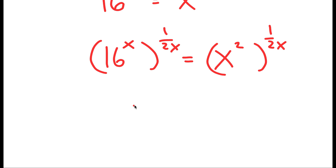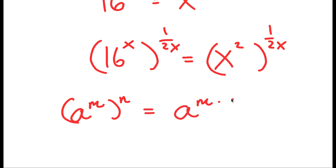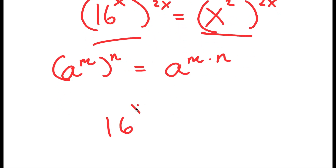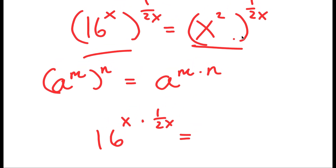Now, if I have something in the form a to the power of m to the power of n, this is equal to a to the power of m times n. So we can use this property for both of these terms. 16 to the power of x to the power of 1 over 2x is equal to 16 to the power of x times 1 over 2x. And x to the power of 2 to the power of 1 over 2x is equal to x to the power of 2 times 1 over 2x.